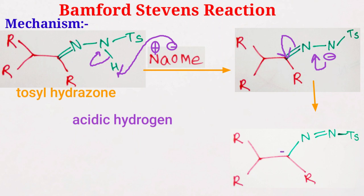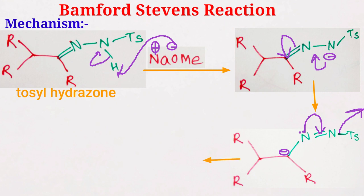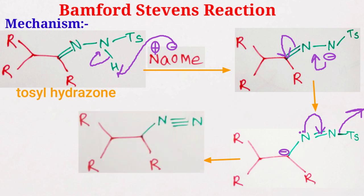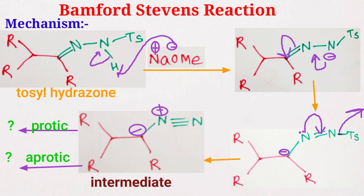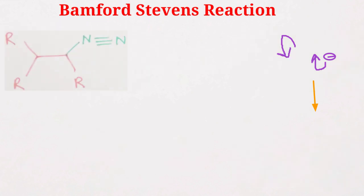Now, the lone pair will push here and the tosyl group goes away from the system, and finally we get this type of system. This is the diazo intermediate of the Bamford-Stevens reaction. After the formation of this intermediate, if we use a protic solvent, that is methanol, then what happens?